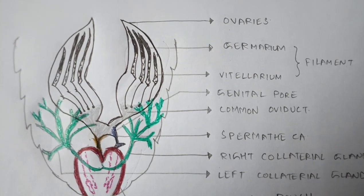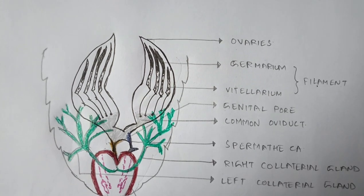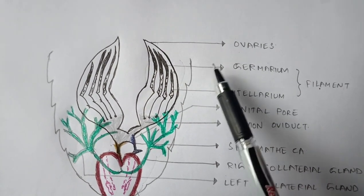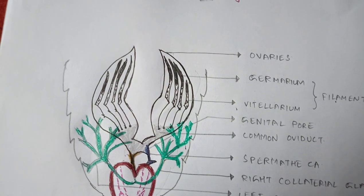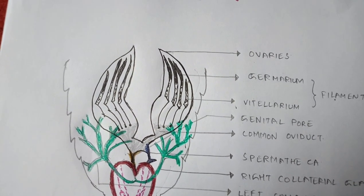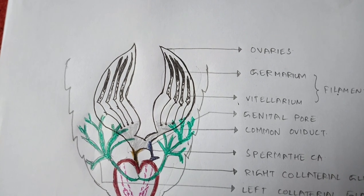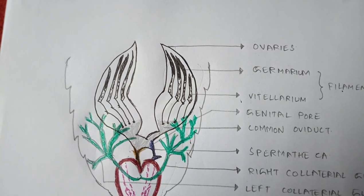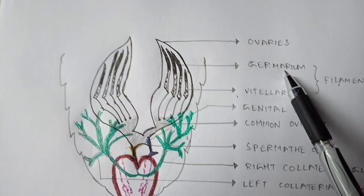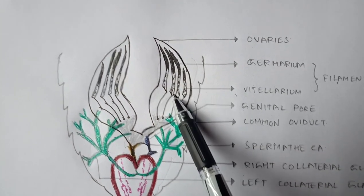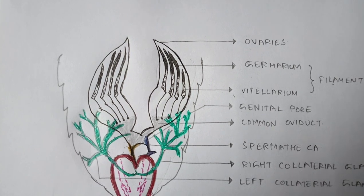The ovaries consist of filaments, and these filaments include germarium and vitellarium. The dark black color indicates germarium and the lighter structures indicate vitellarium. The difference between them: germarium contains immature eggs (without yolk), while vitellarium contains mature eggs (with yolk). That is the main difference between germarium and vitellarium.